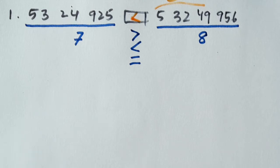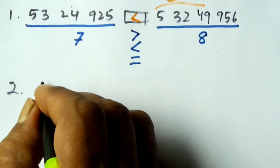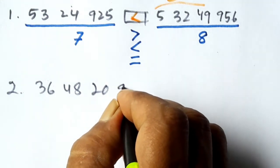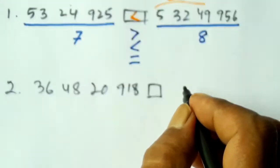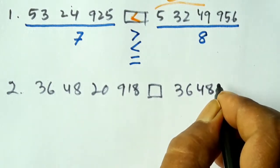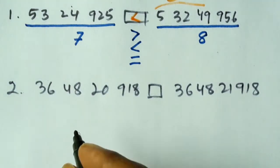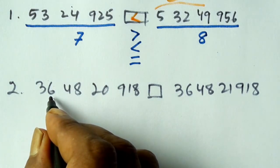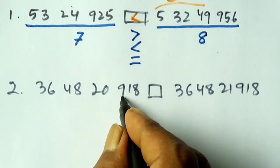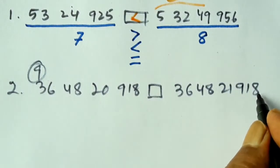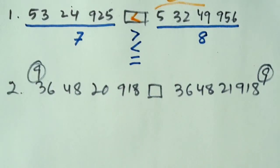The next question: the number is 364820918, and the second number is 364821918. Both have 9 digits total. Since the number of digits is equal, we compare the numbers from the left, digit by digit.